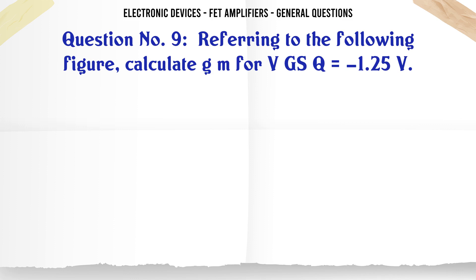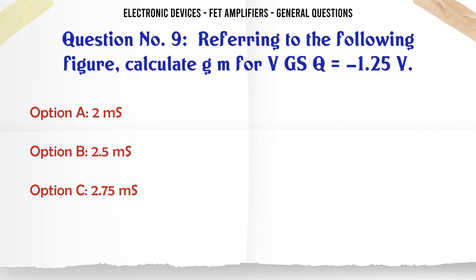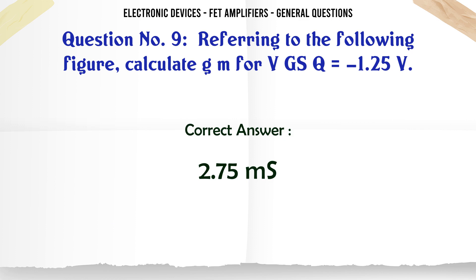Referring to the following figure, calculate GM for VGSQ = 1.25V. A. 2mS. B. 2.5mS. C. 2.75mS. D. 3.25mS. The correct answer is 2.75mS.